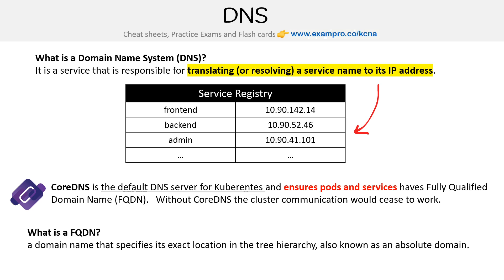You might ask what a fully qualified domain name is. It's a domain name that specifies its exact location in the tree hierarchy, also known as an absolute domain — a visual would help there. What's important to remember is that we have this table, the service registry, and there's a way to look up DNS.